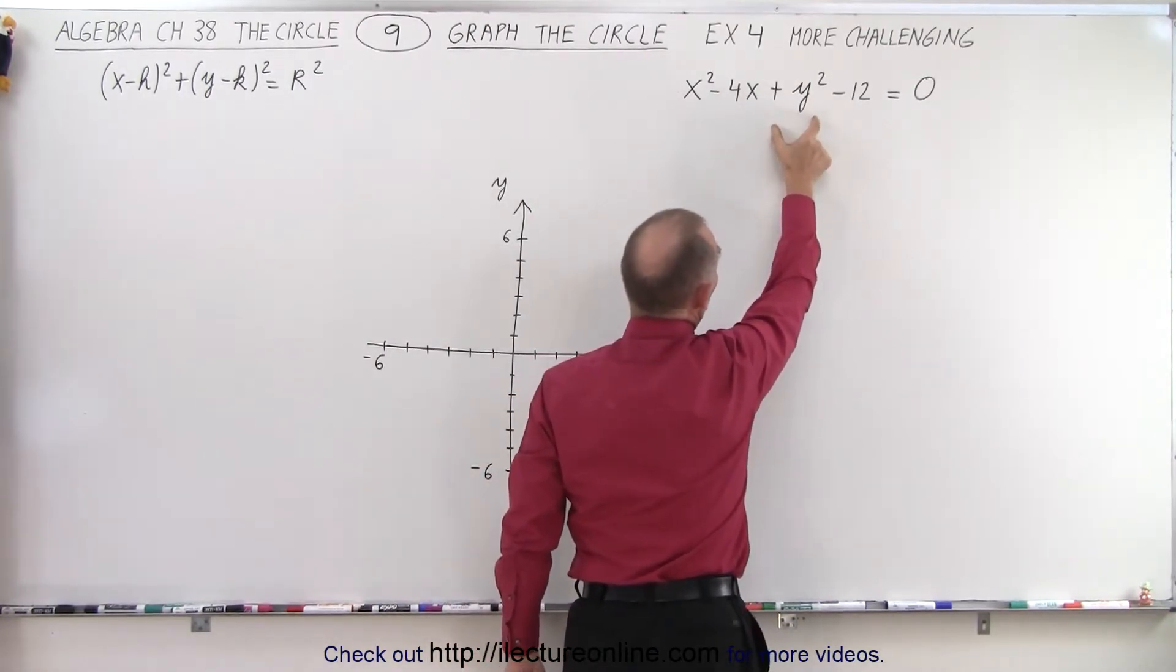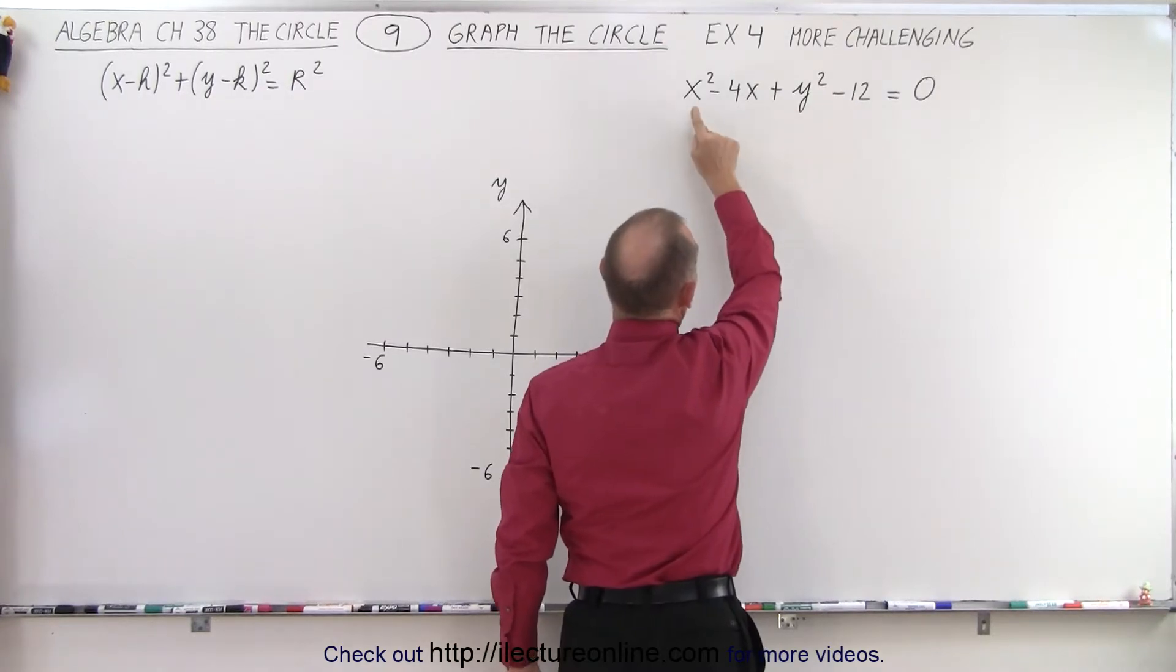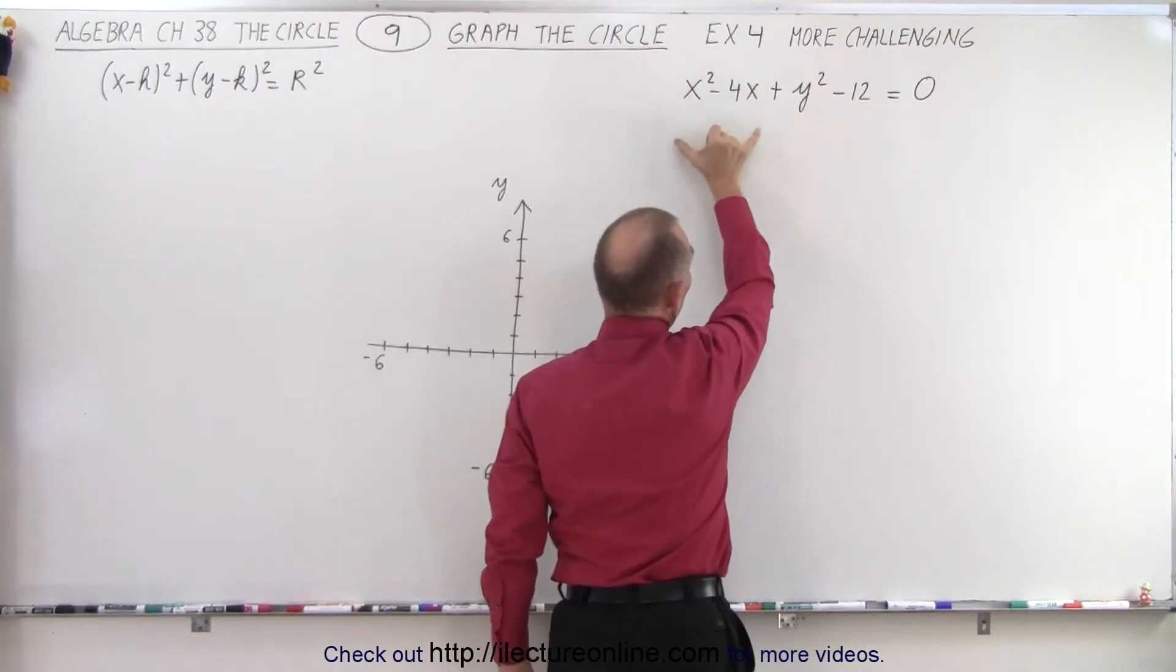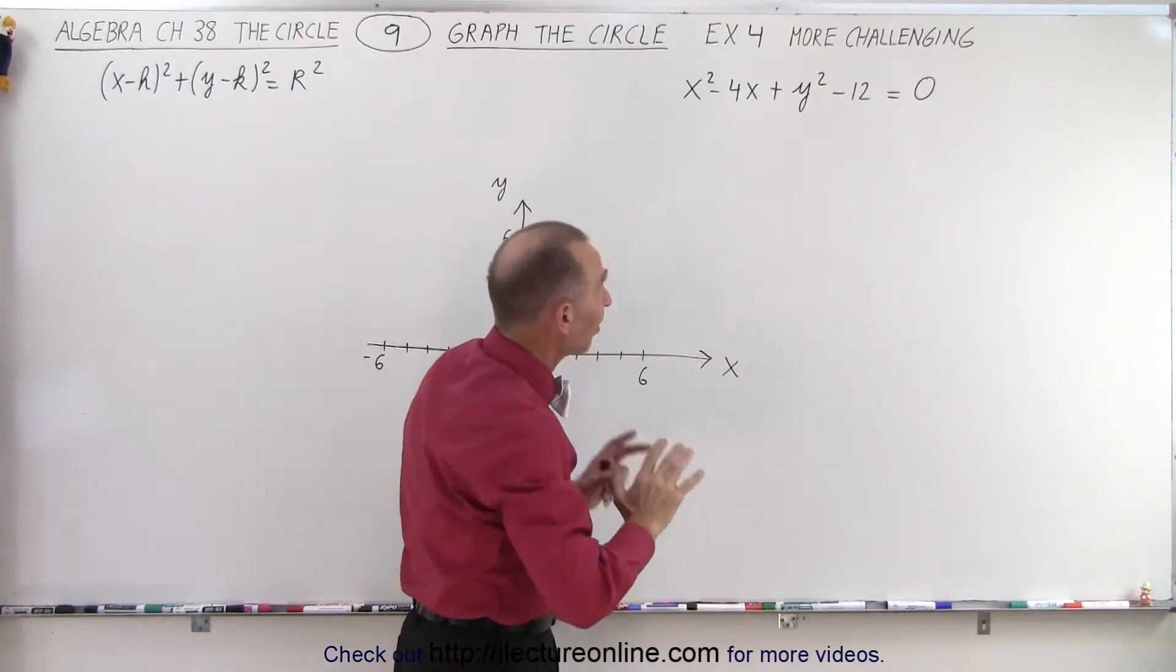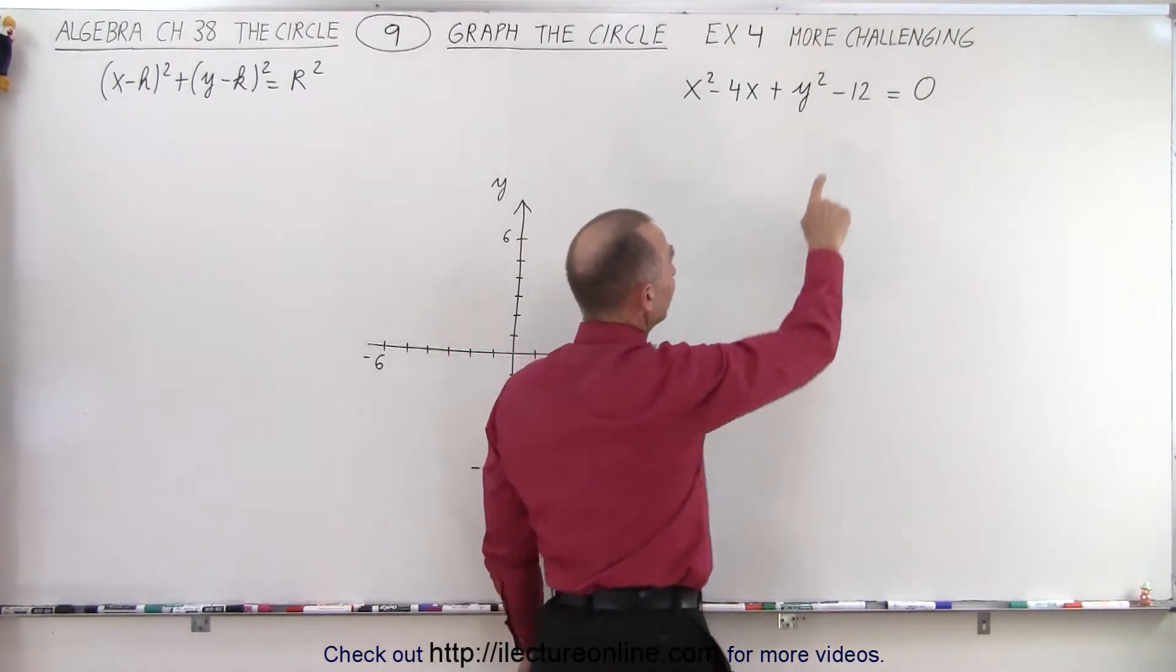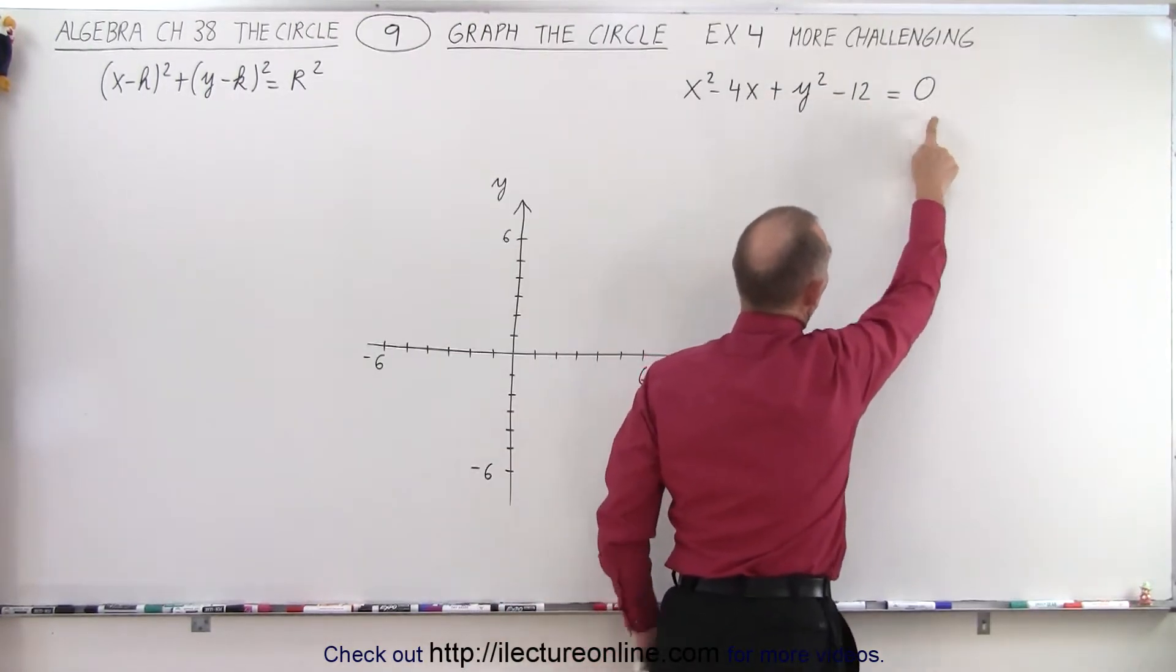So, in other words, we simply have a y-square on the left side, but we do have an x-square minus 4x, so we probably need to complete the square for the x, but not for the y. And this constant right here, we probably want to move it to the right side.